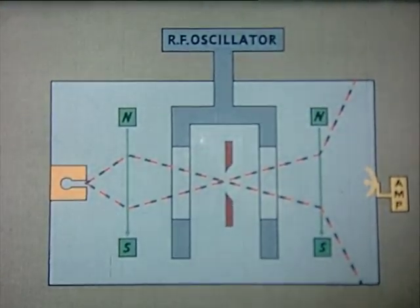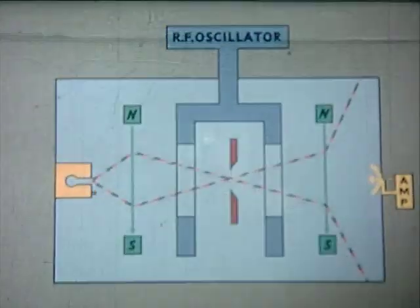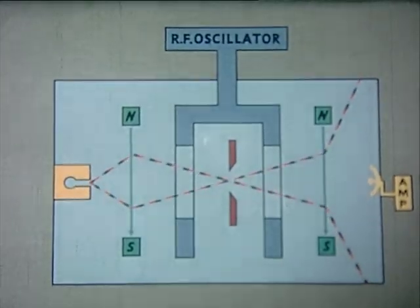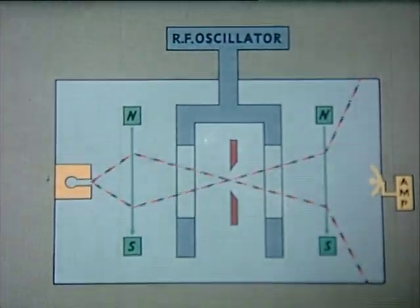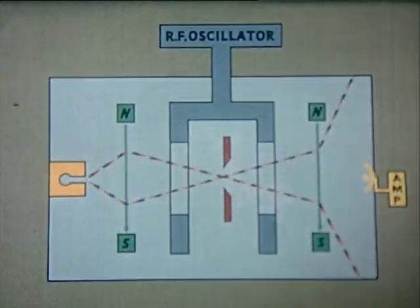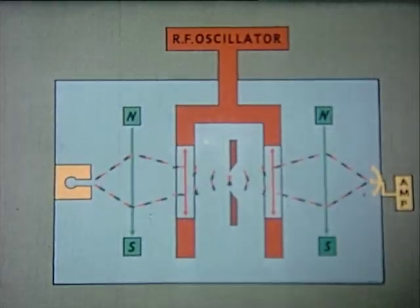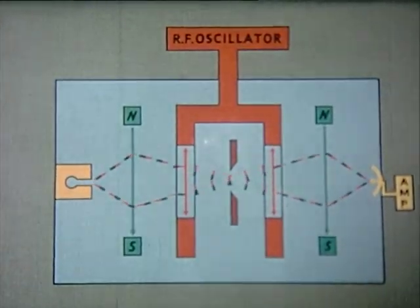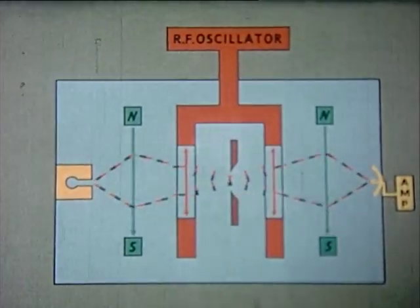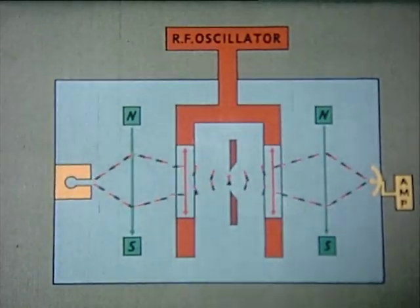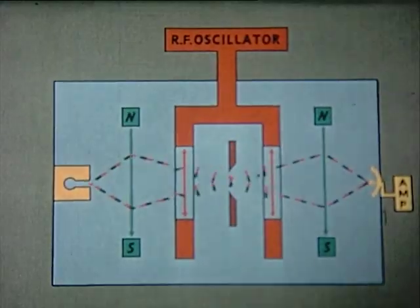Here we see the paths of the atoms without the radio frequency oscillator. No polarity changes occur in the center region and the atoms are deflected away from the detector. When the radio frequency oscillator is applied and when its frequency is exactly equal to the natural frequency of cesium, the atoms respond and reverse their polarity.